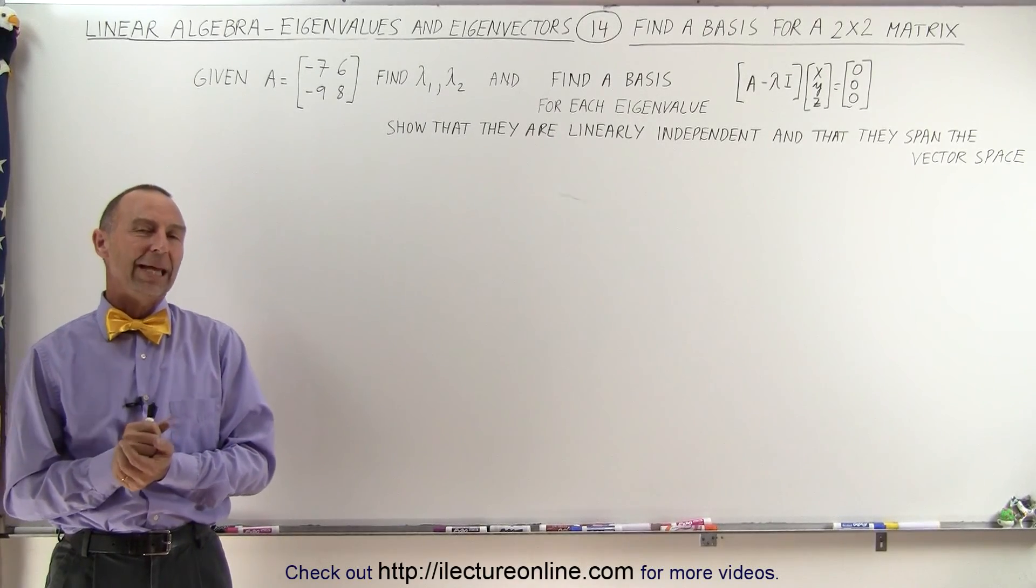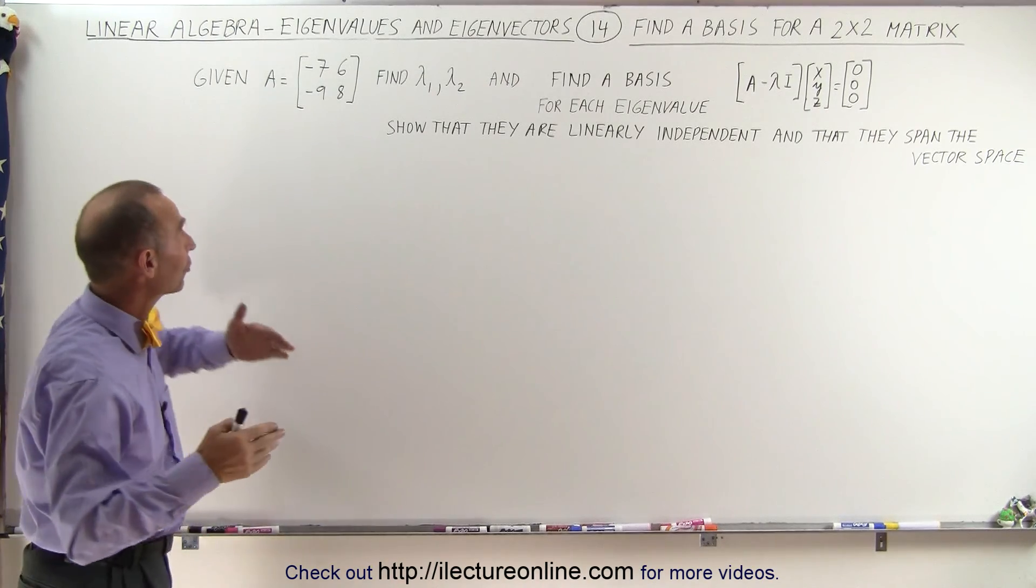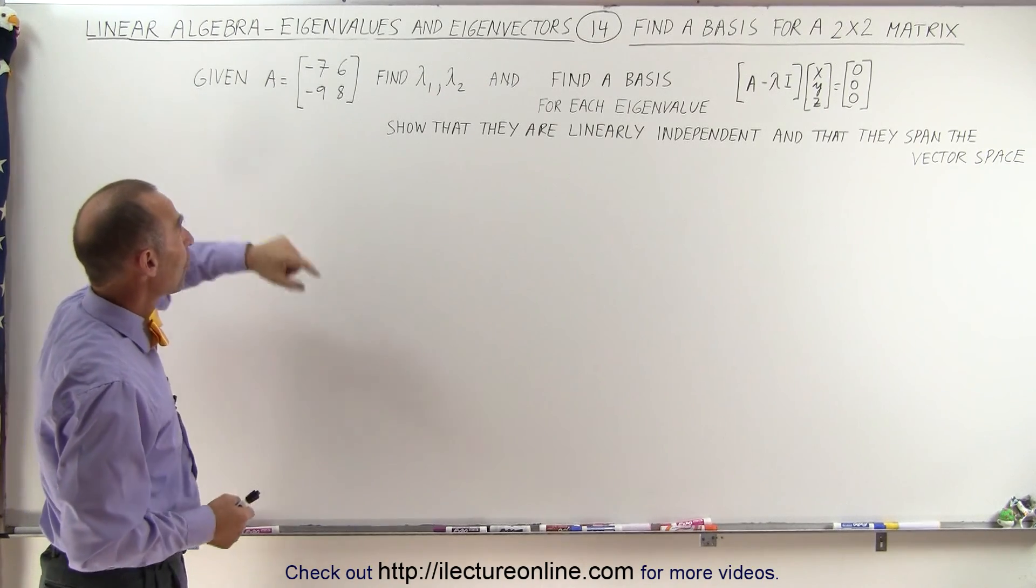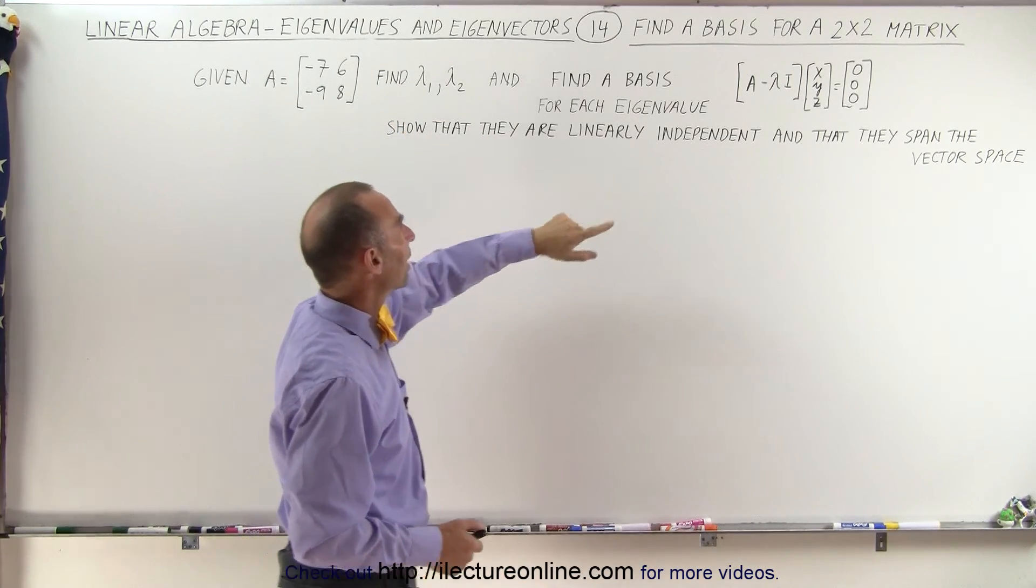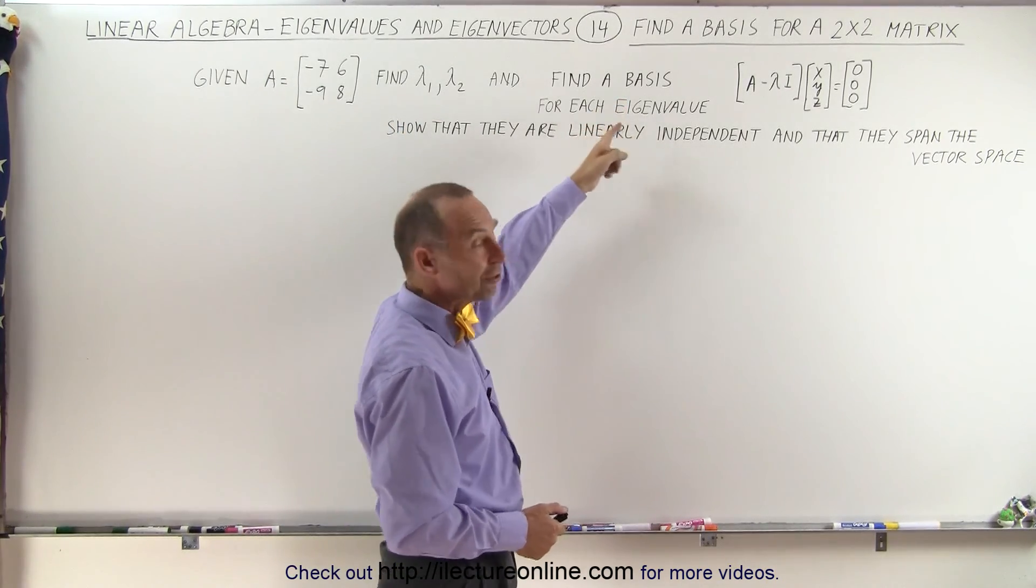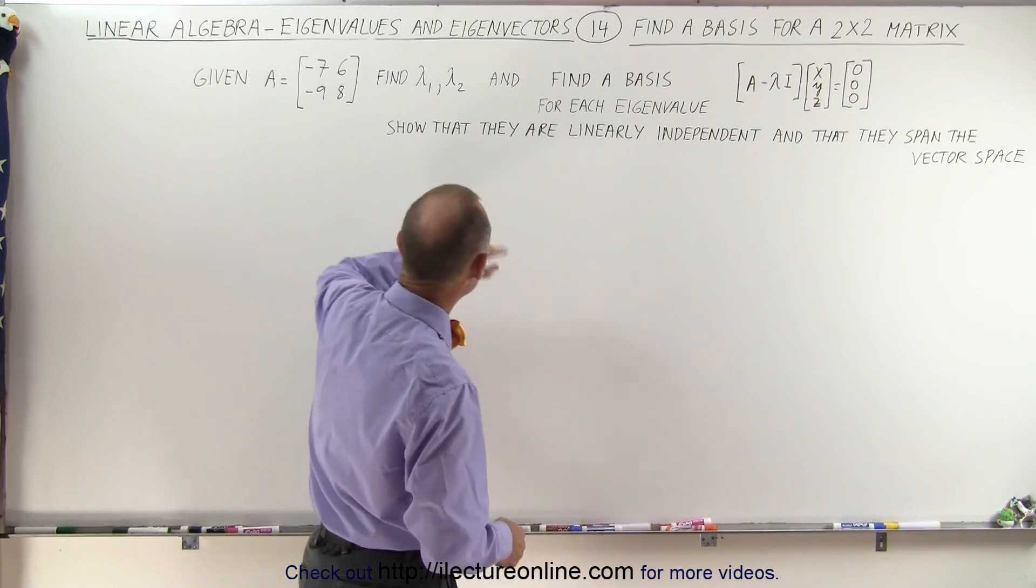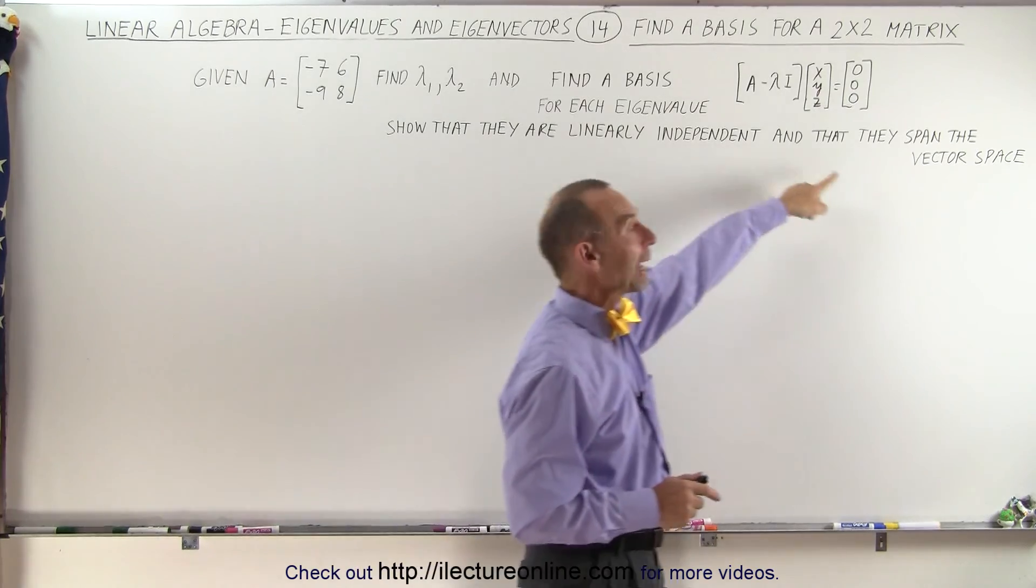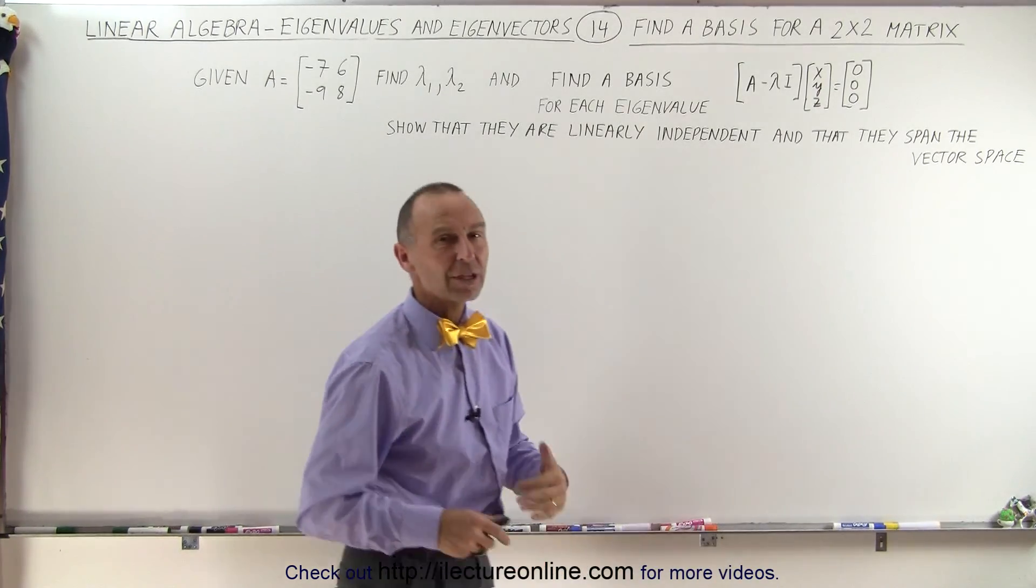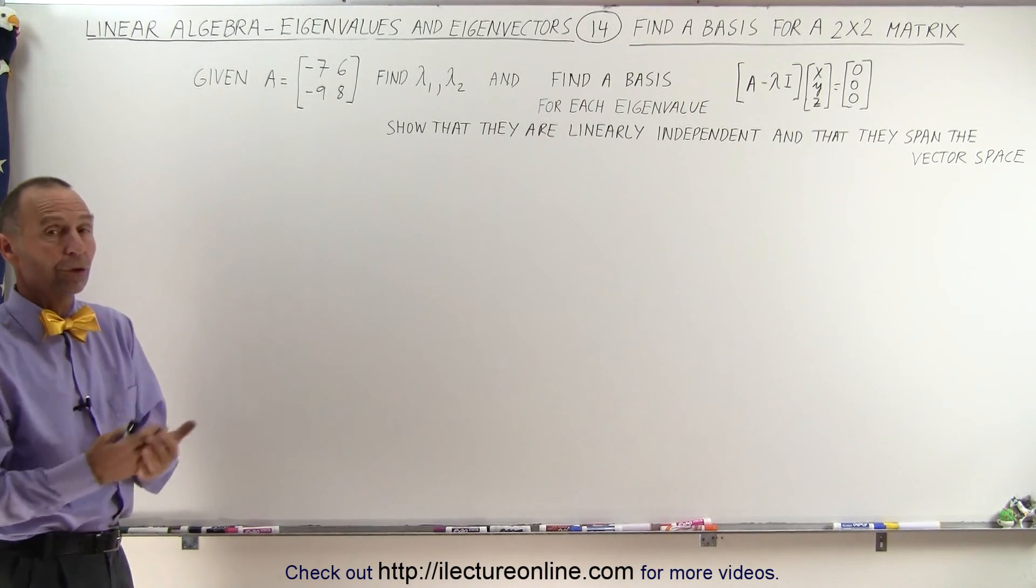Welcome to ElectronLine. In this video, we're going to go the entire distance. In other words, we're going to start with a 2x2 matrix, find both eigenvalues, find the basis for each eigenvalue and the associated eigenvectors, and then show that they are linearly independent and that they span the vector space. So here we're getting a fairly good view of how to do all that and what those terms actually mean.